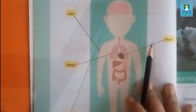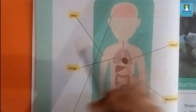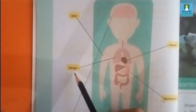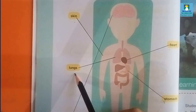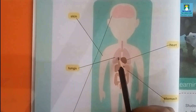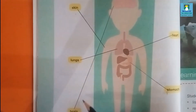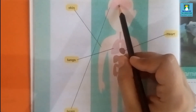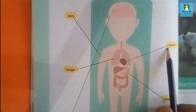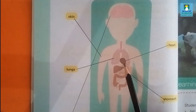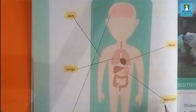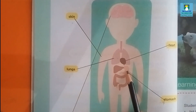Again I repeat the answers. First one: skin, which is the outer layer. Second: lungs, which helps in breathing. Third one: brain, which is present inside our head. Fourth: heart, which pumps the blood to all parts of our body. Last one is stomach, which helps in digestion.